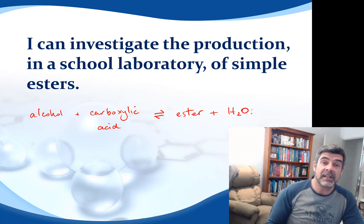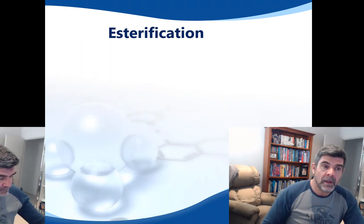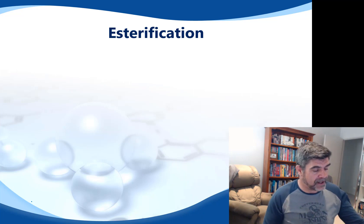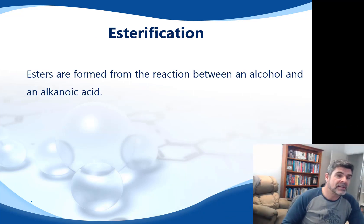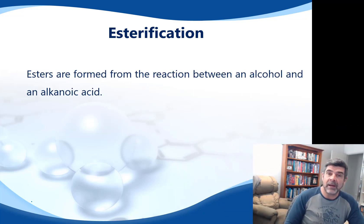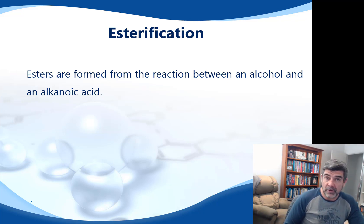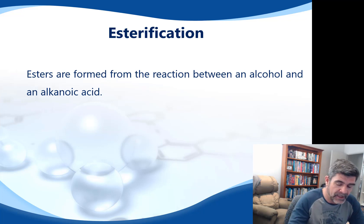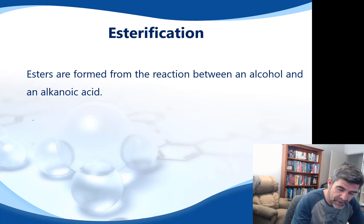So let's look at this in a little bit more detail. Esterification is a type of chemical reaction — a process where an alcohol and an alkenoic or carboxylic acid are added to one another to produce a new organic product. The simplest way to demonstrate this is to write it down in terms of the structural formulae, so I'm going to pick two to start off with.